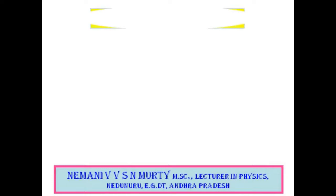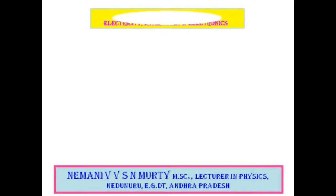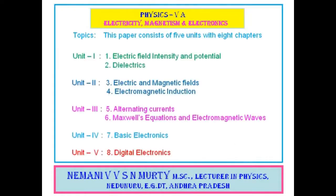Physics 5A — the title is Electricity, Magnetism and Electronics. This paper consists of 5 units divided into 8 chapters.